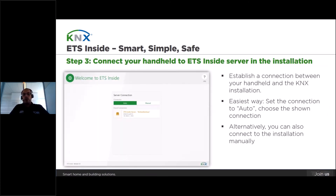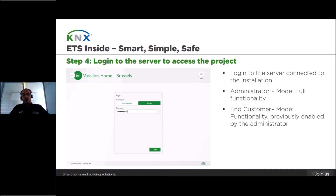In step number three, you have to open the ETS-Insight client app and select the ETS-Insight server, which should normally be found in the found connections. If for any reason it's not automatically shown, you can always enter its IP address manually by tapping the manual tab. After connecting to the respective ETS-Insight server via your client, you will be asked to create a new password if it's the first time. If not, then you have to enter your administrator password.